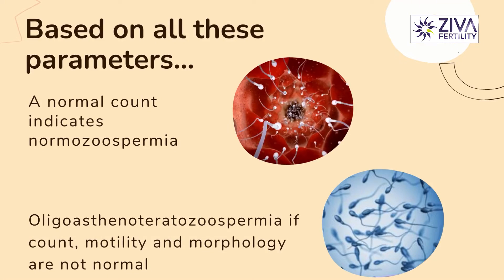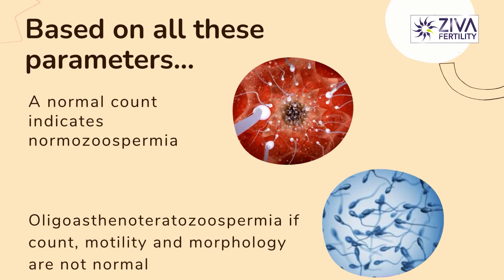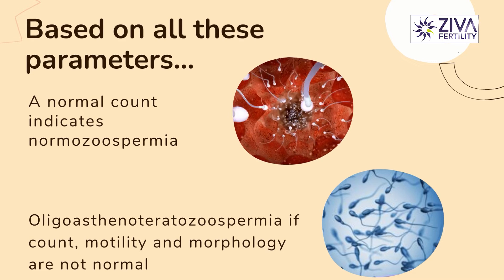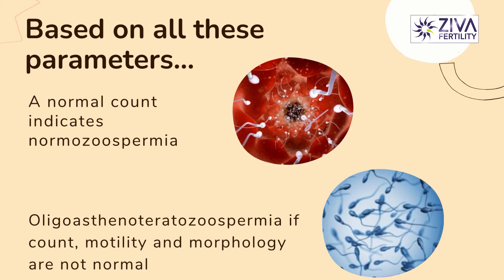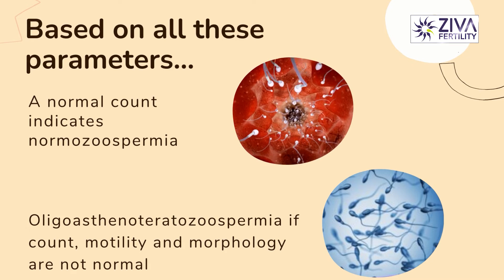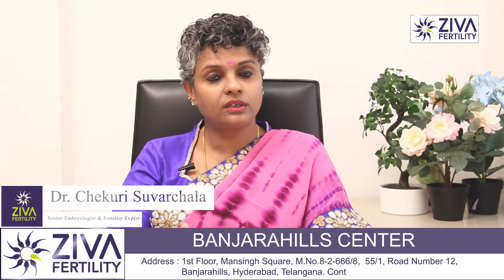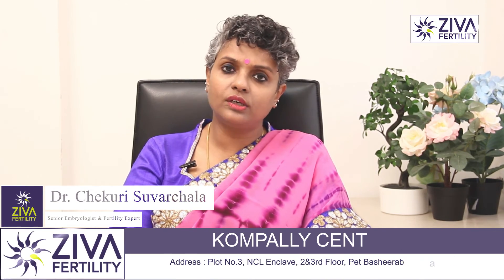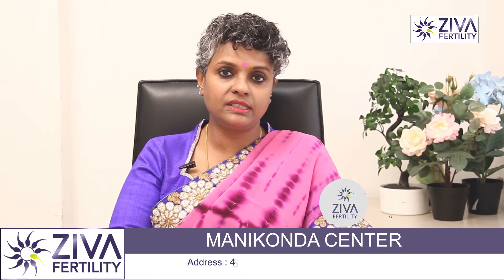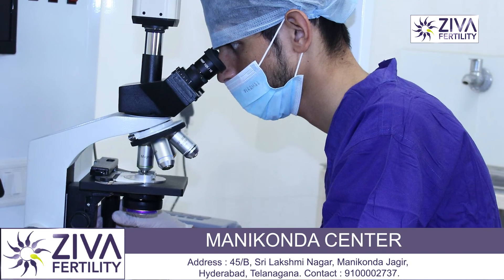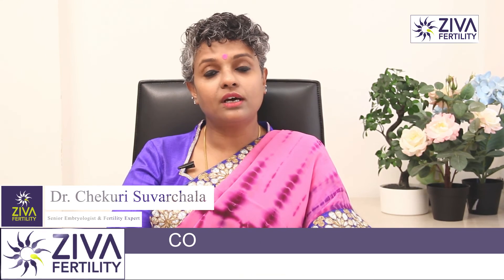All these are assessed and based on these reports, it is called normal zoospermia if everything is normal. If the count, motility, or morphology are not good, then it is reported as oligoasthenoteratozoospermia — that is, all three parameters are not good. If only one or two are not good, it may be called oligoasthenoteratozoospermia or asthenoteratozoospermia depending on the kind of problem seen in the report. It's very easy to read a semen analysis report, and depending on that, treatment protocols are altered.